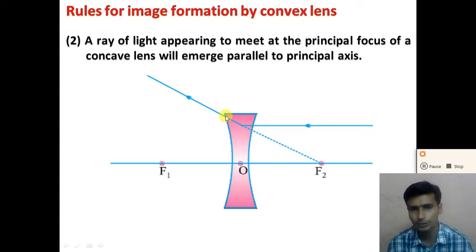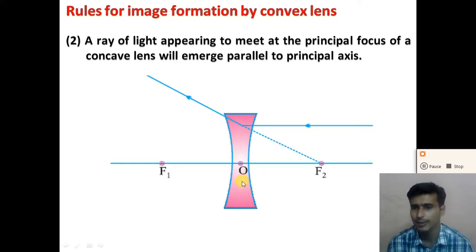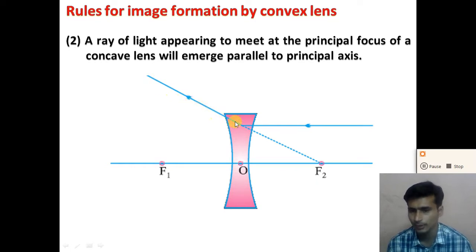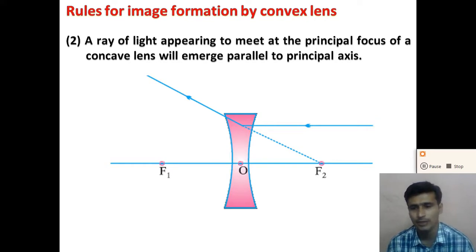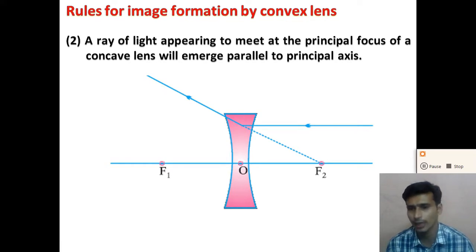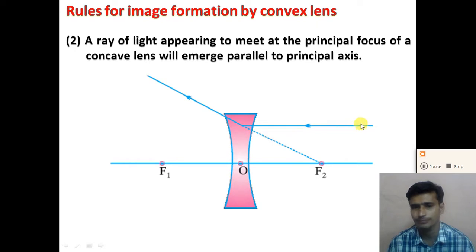...due to the material of the lens, the ray of light is diverted such that it emerges parallel to the principal axis. So the second rule states: when a ray of light incident on the concave lens appears to meet at the principal focus, after refraction the ray will be parallel to the principal axis. When the ray appears to pass from the second principal focus, after refraction the emerging ray is parallel to the principal axis.